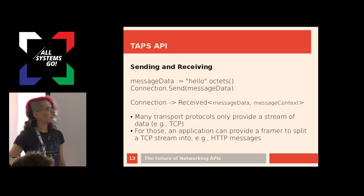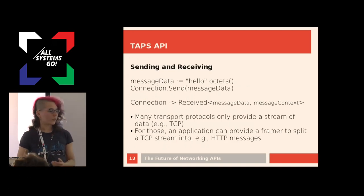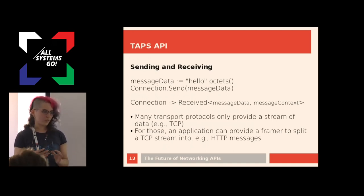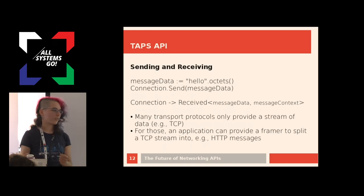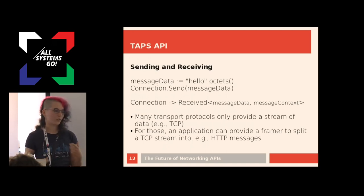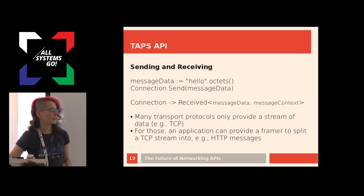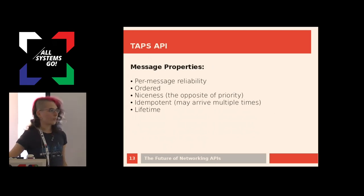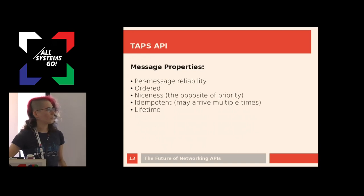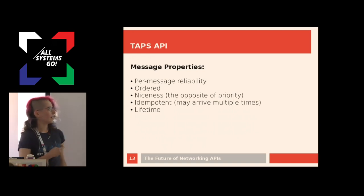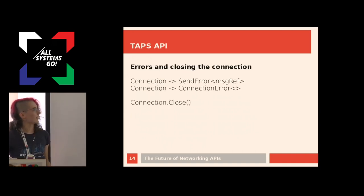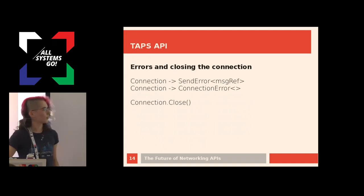There are messages that you can send and receive over these connections. An interesting part is that we introduced the concept of framers. TCP doesn't provide framed messages. HTTP has to do that framing, but if the application just wants to send and receive an HTTP message, maybe the HTTP library would implement the framer. You can just plug that into the TAPS API, and then the application working on top of HTTP can just get an HTTP message and send an HTTP message. Messages can also have their own properties. For example, maybe one message has a different priority than another — we call this niceness, which is the inverse of priority — and we also have a lifetime attribute for messages.